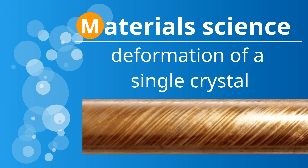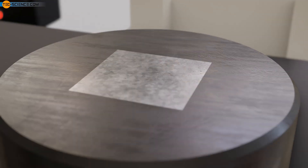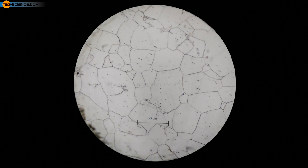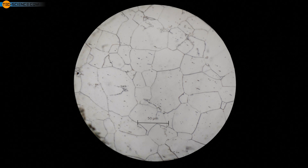Deformation of a Single Crystal Lattice. The structure of metals usually consists of many individual grains, also called crystallites, which are separated from each other by structureless regions. In the micrograph, the structure becomes visible under the microscope. Although the individual grains have the same lattice structure, it is spatially oriented differently from grain to grain.